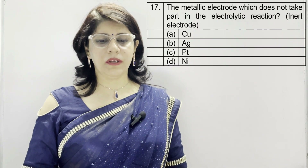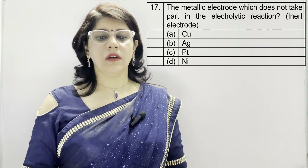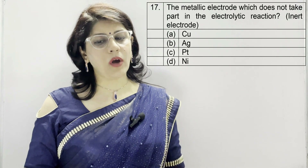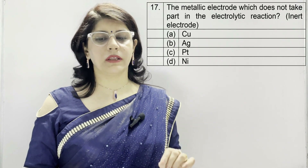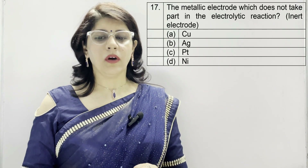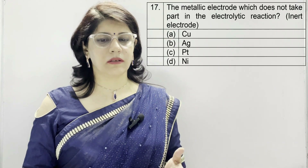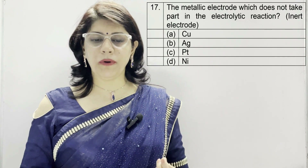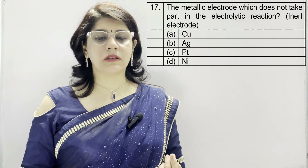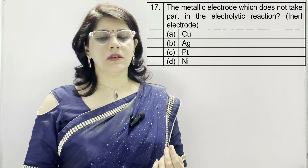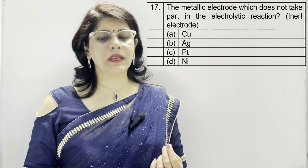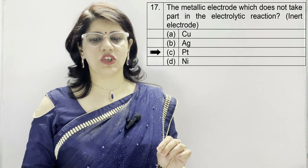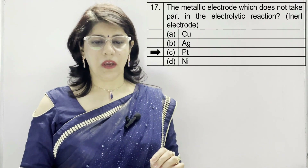In question number 17: the metallic chloride which does not take part in the electrolytic reaction — meaning an inert electrode. A: copper, B: silver, C: platinum, D: nickel. The correct option is C — platinum.